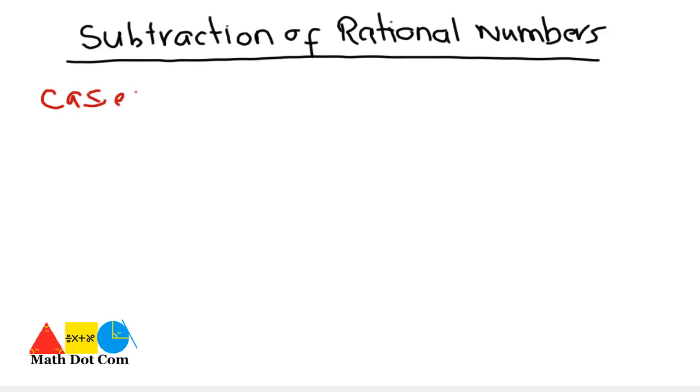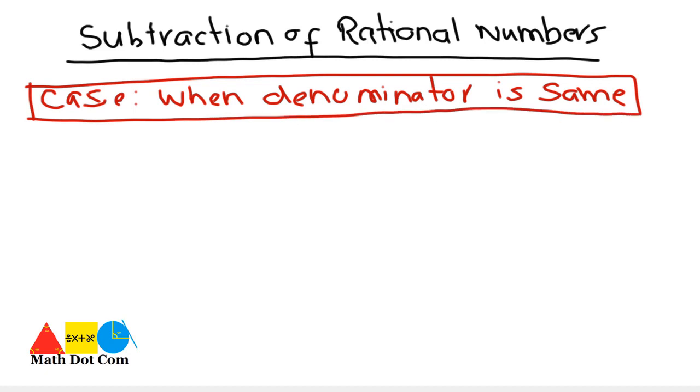Today we will see how you can subtract the rational numbers in two cases. This is case 1 when denominator of the numbers is same.